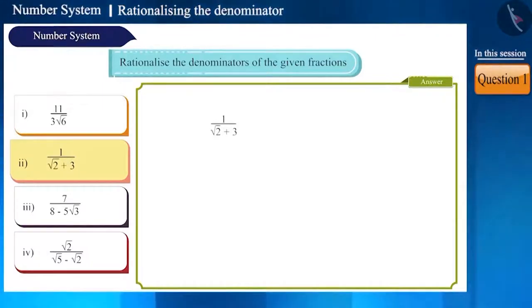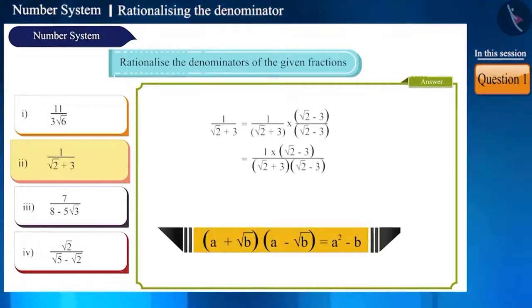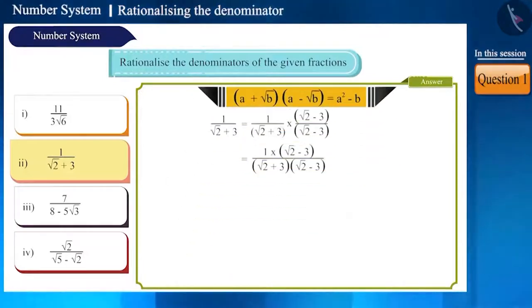1 by root 2 plus 3. Here, we will multiply the numerator and denominator by root 2 minus 3, which belongs to this identity. Here, when the numerator is multiplied by 1, the number will remain the same. And the denominator will become root 2 square minus 3 square is equal to 2 minus 9 is equal to minus 7. Therefore, after rationalization, the number will be root 2 minus 3 by minus 7, which can also be written in this way.